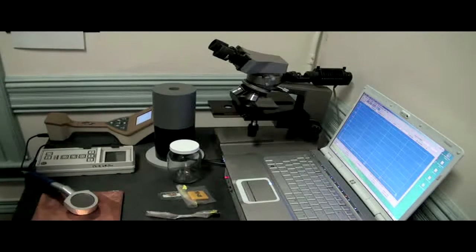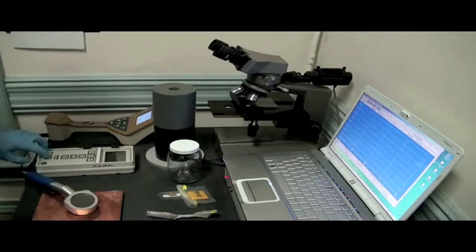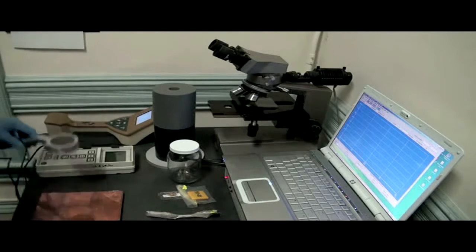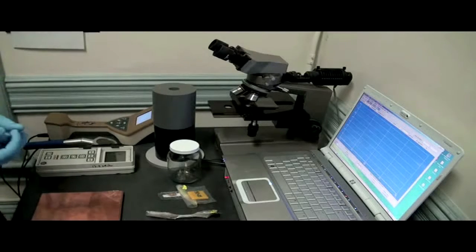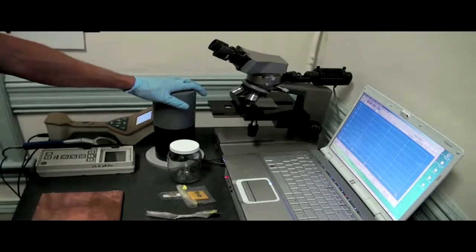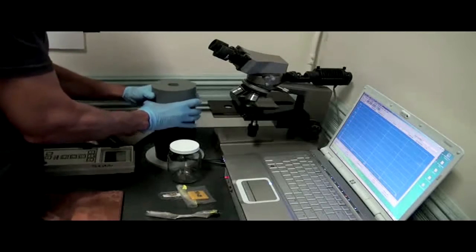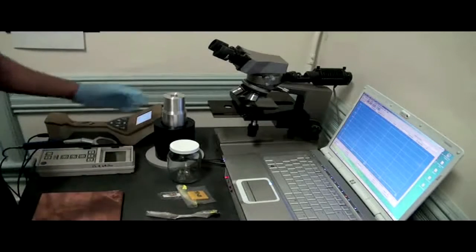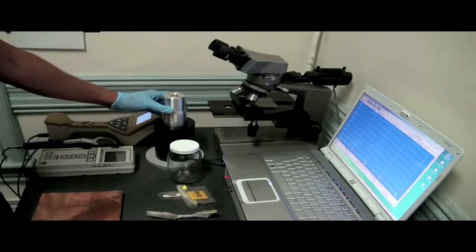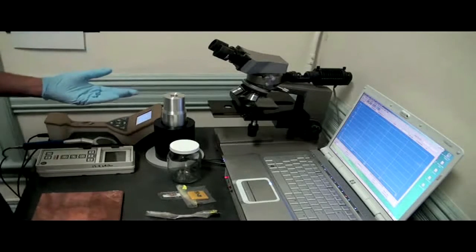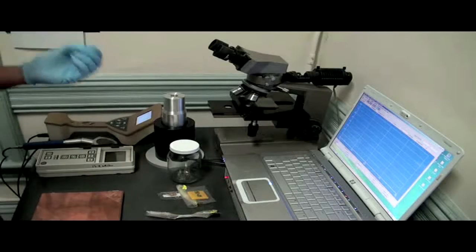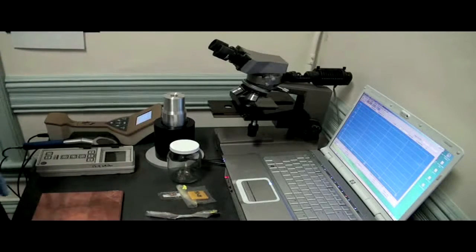For that we use a different kind of device. For that we actually use a gamma spectrometer. And what this does, we use a crystal, and the crystal actually will give off flashes of light when it's exposed to gamma rays. And we can actually see which isotope those gamma rays are from.